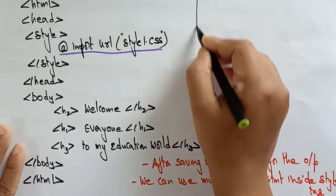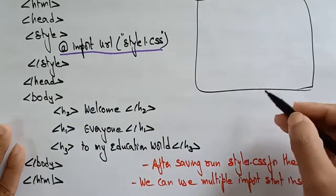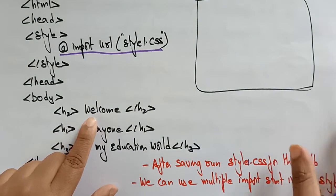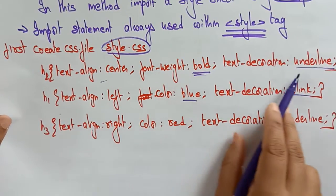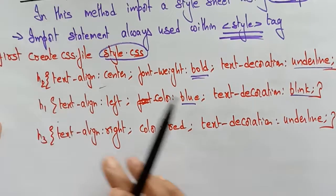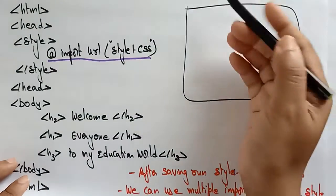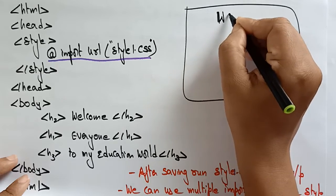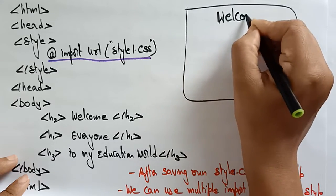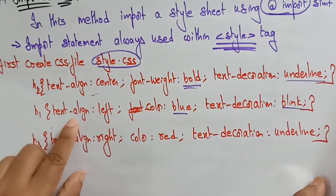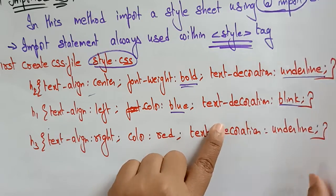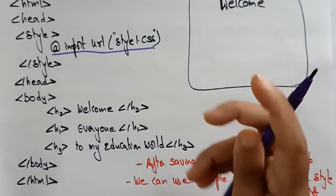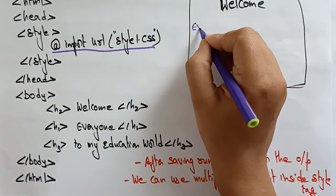Now what will be the output? H2 is 'Welcome'. For H2, text-align is center, font-weight is bold, and text-decoration is underline. So it should appear in the middle with bold underlined letters — 'Welcome'.